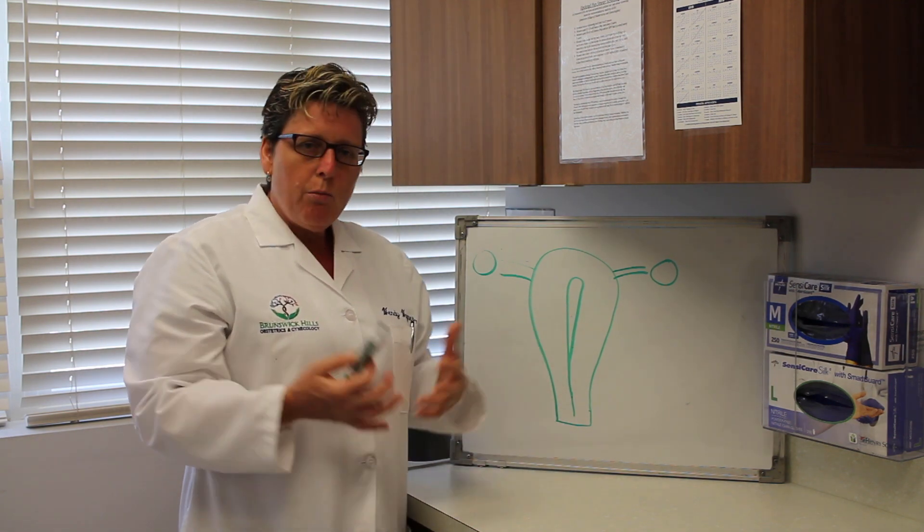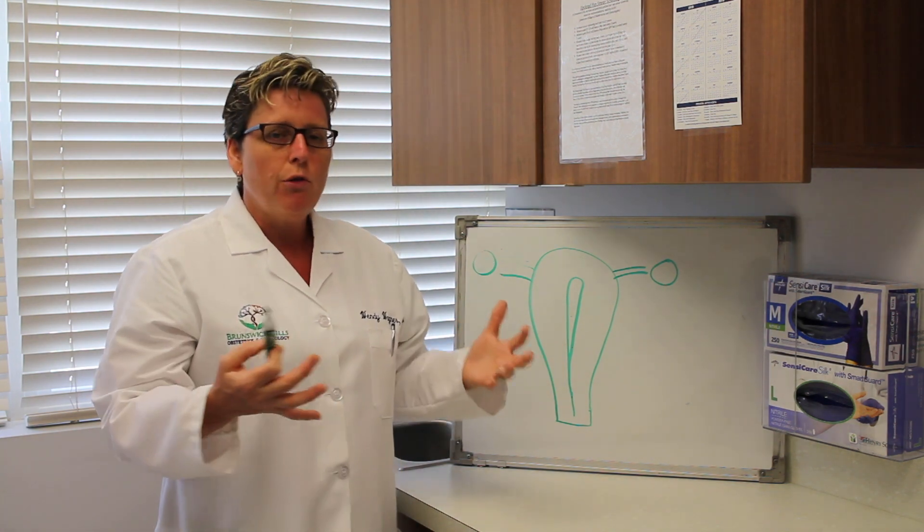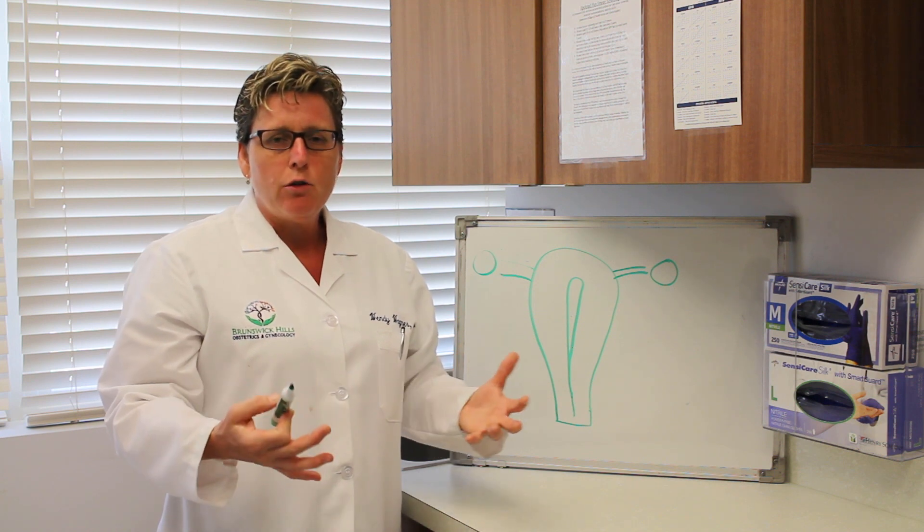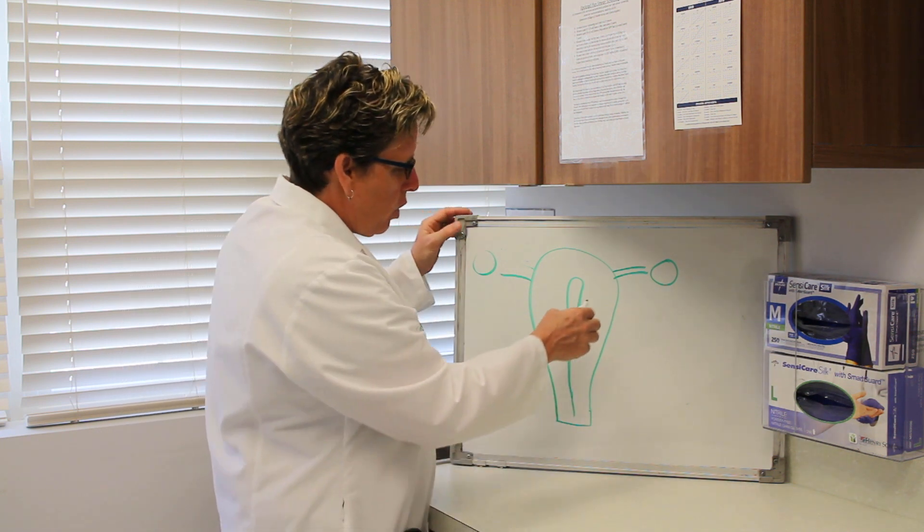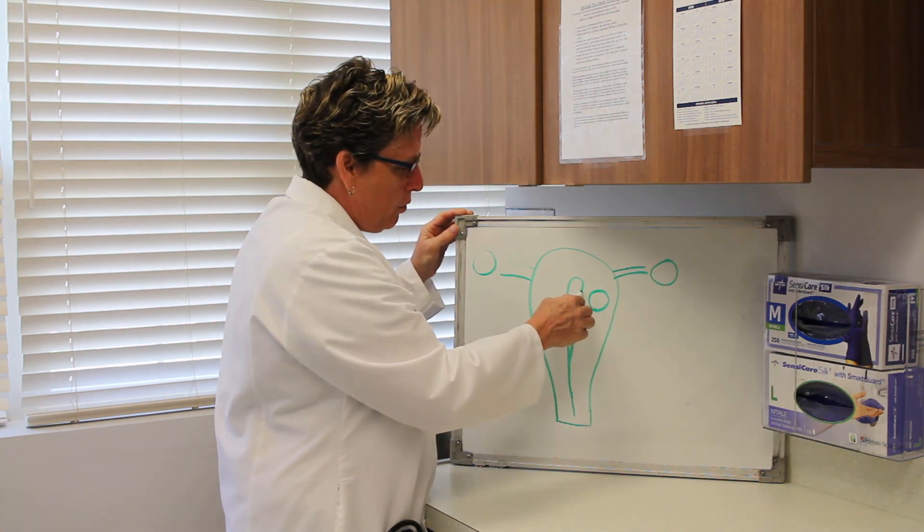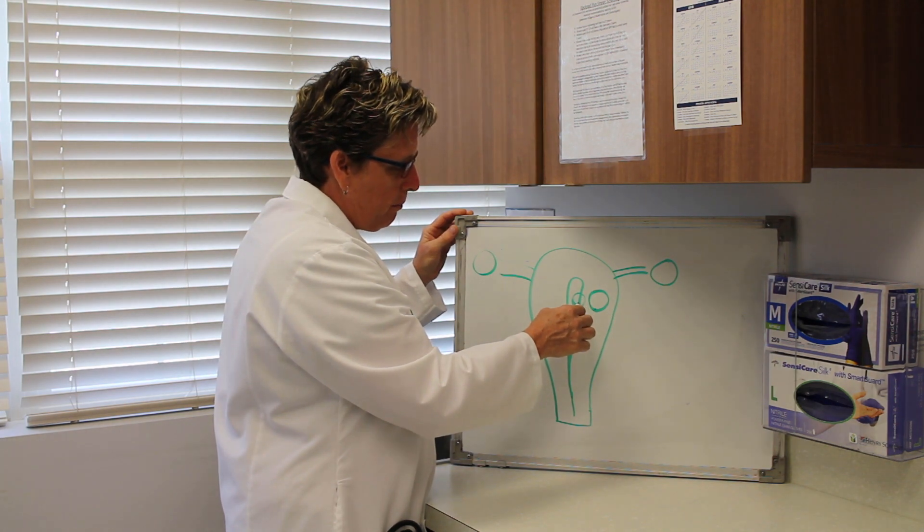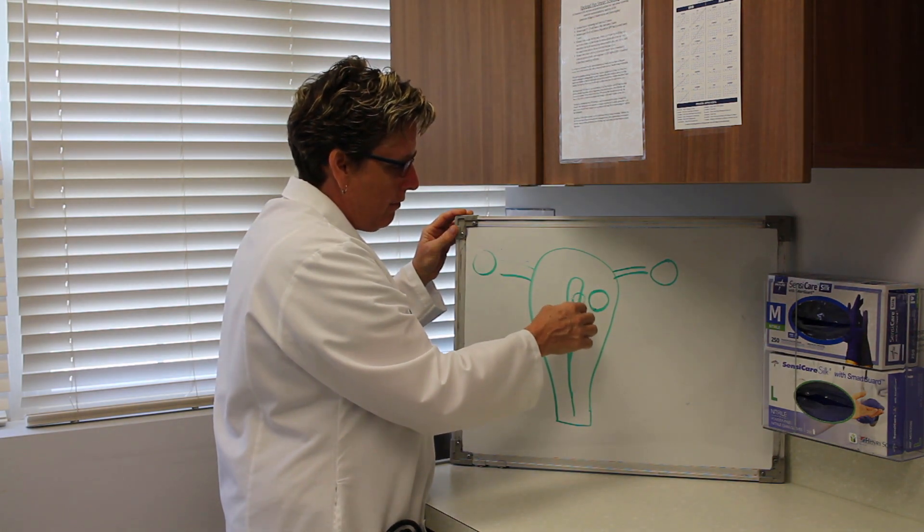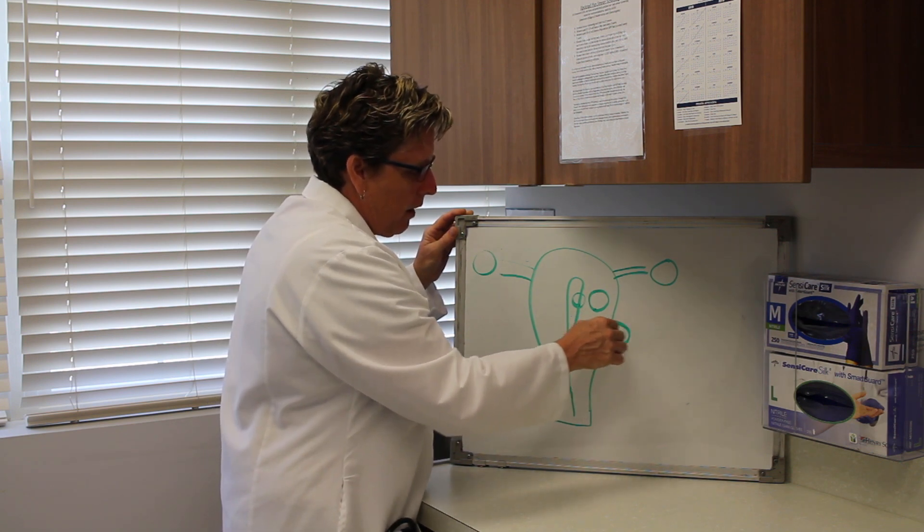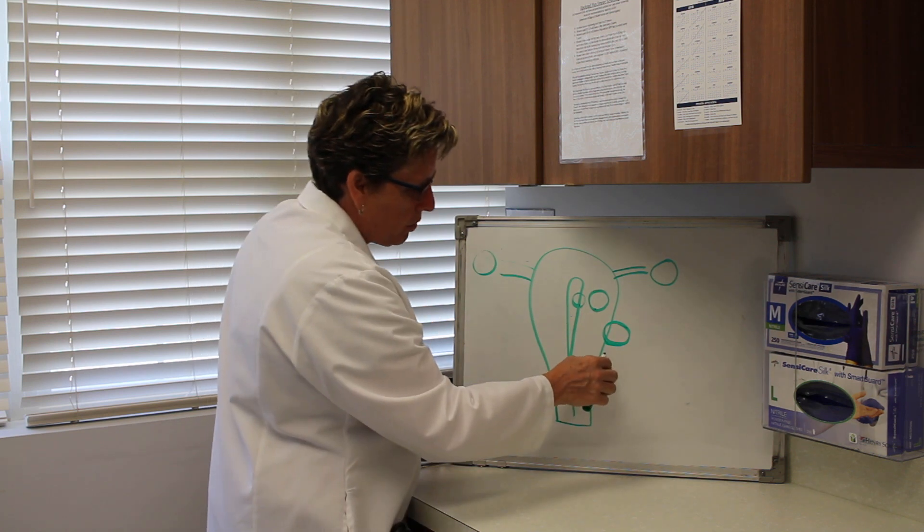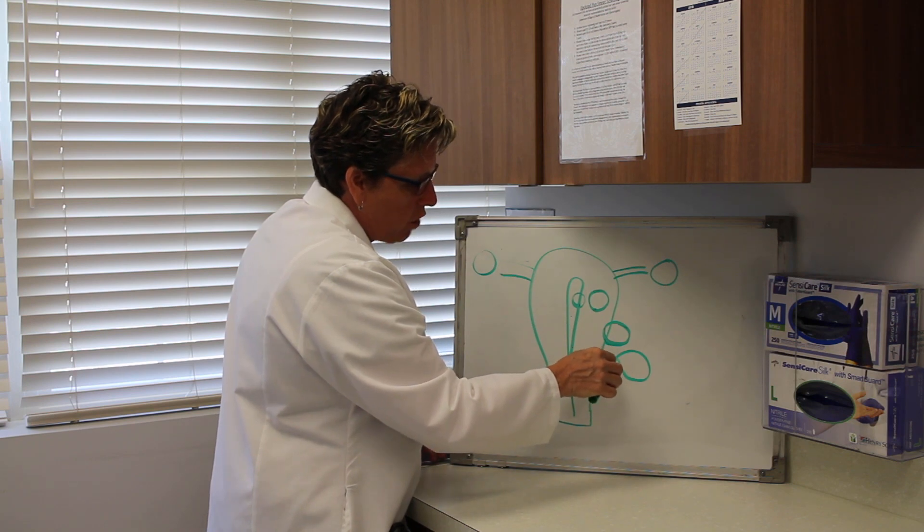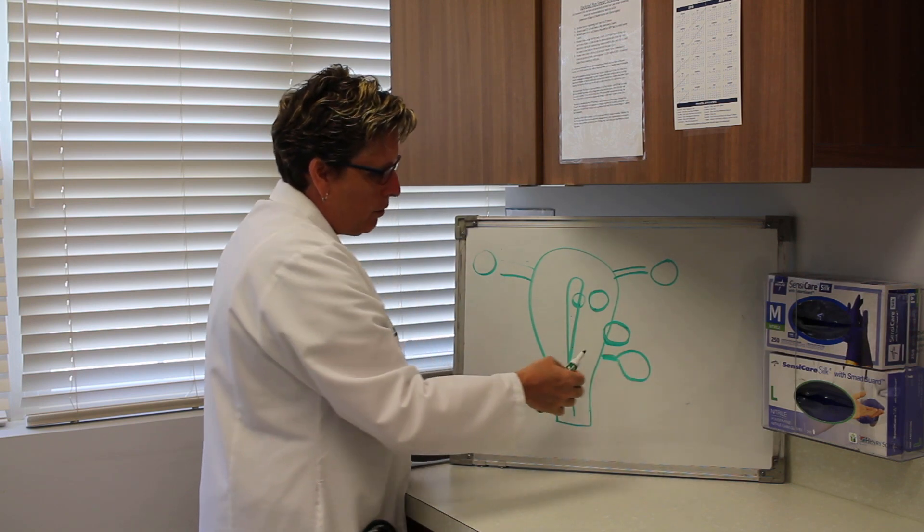We generally break fibroid masses, fibroid tumors many people call them, up into three different categories and they're categorized by the placement in the uterus. One is called intramural and that's in the body of the uterus. One is submucosal and that's where all or a portion of the fibroid is in the cavity of the uterus. And then the third is subserosal, where it's on the outside of the uterus. Included in the subserosal is something that we call pedunculated fibroid, where a fibroid is on a stalk and it's outside of the uterus.